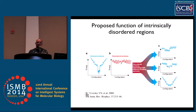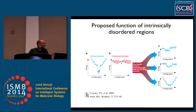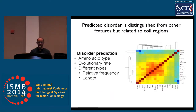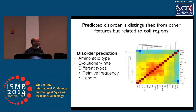One problem with disorder is that it's hard to determine experimentally — it's hard to know what regions are disordered, and people don't really agree on what disorder means since you can discuss it in different degrees. So we have to rely on predictions, using either machine learning methods or statistical methods. The basic definition is that disordered regions often do not have many hydrophobic residues but have many charged residues.